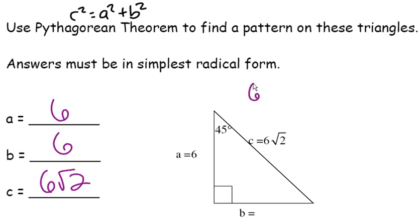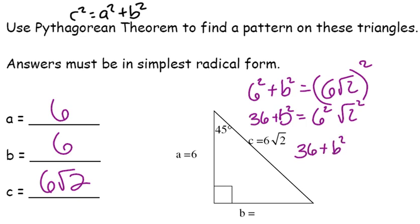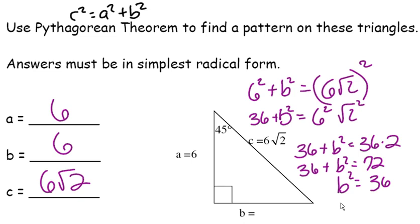Let's just check that out. We got 6 squared plus B squared equals 6 radical 2, quantity squared. So 36 plus B squared equals — remember the way we solve these, we distribute the square. These two undo each other, so we would have wound up with 36 plus B squared equals 36 times 2. So 36 plus B squared equals 72, which means that B squared equals 36, and B equals 6.